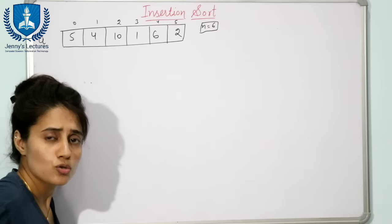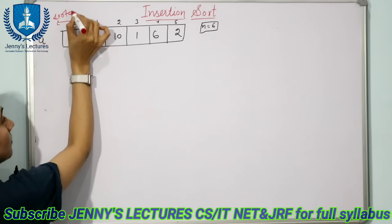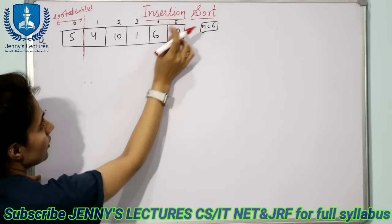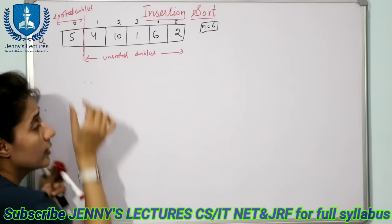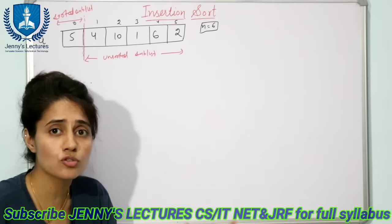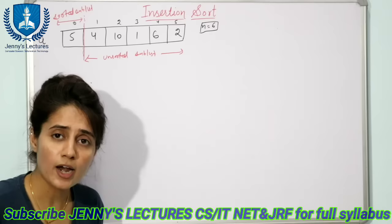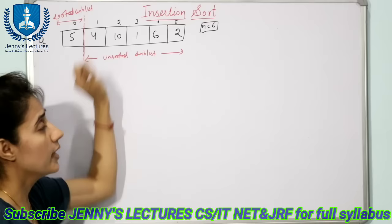By default, we take the first variable — this is considered as our sorted sublist. From index 1 to the last, this is the unsorted sublist. Why do we take one variable in the sorted sublist? Because if you have only one value, that value is always sorted — no need to compare with any other values. So by default, A[0] is sorted.